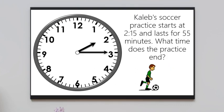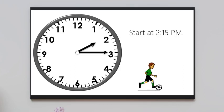Let's try a harder one. Caleb's soccer practice starts at 2:15 and lasts for 55 minutes. What time does the practice end? So we start at 2:15 and now let's count by 5s to get to 55.